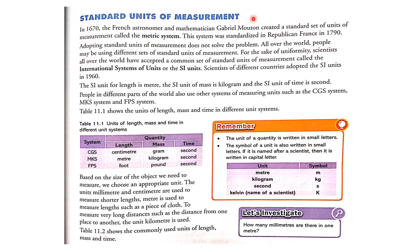Standard units of measurement. In 1670, the French astronomer and mathematician Gabriel Moten created a standard set of units of measurement called the metric system. This system was standardized in Republican France in 1790.